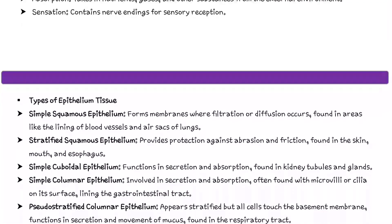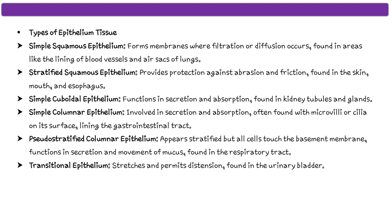Moving on to types of epithelial tissues. The first type is simple squamous epithelium, which forms membranes where filtration and diffusion occurs, found in areas like the linings of blood vessels and air sacs of the lungs. The next is stratified squamous epithelium, which provides protection against abrasion and friction, and is found in the skin, mouth, and esophagus.